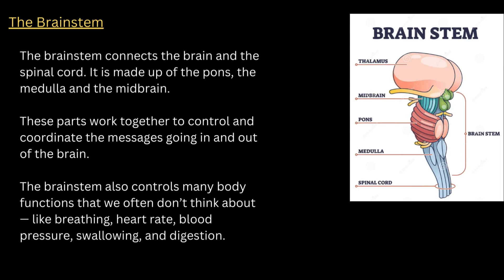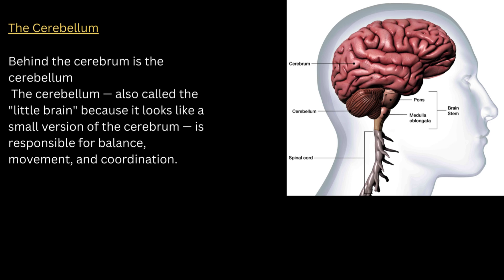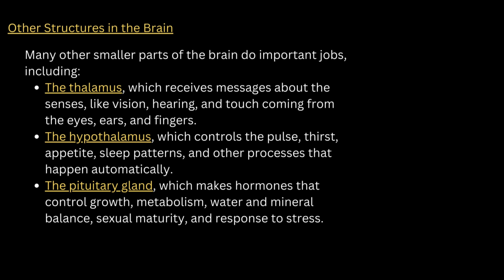Behind the cerebrum is the cerebellum. The cerebellum is also called the little brain because it looks like a small version of the cerebrum. It is responsible for the balance, movement, and coordination of the body. Other structures of the brain include the thalamus, hypothalamus, and pituitary gland. The thalamus receives messages about the senses — like vision, hearing, and touch — coming from the eyes, ears, and fingers. The hypothalamus controls pulse, thirst, appetite, sleep patterns, and processes that happen automatically. The pituitary gland makes hormones that control growth, metabolism, water and mineral balance, sexual maturity, and responses to stress.